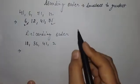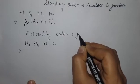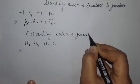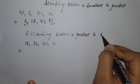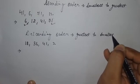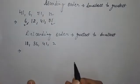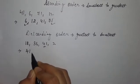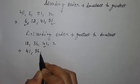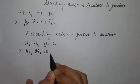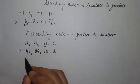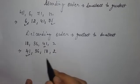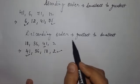And descending order. Descending order means from greatest to smallest. So, greatest number is here. First of all, we'll write 41, then 36, then 18, and then 2. So, 41 is the greatest number and 2 is the smallest number.